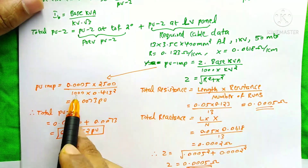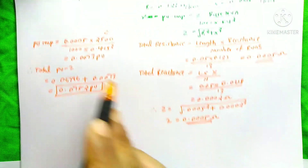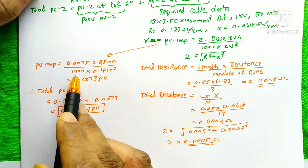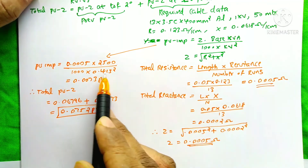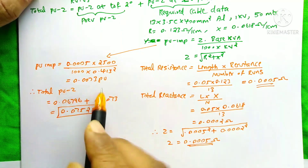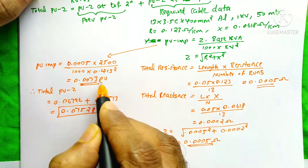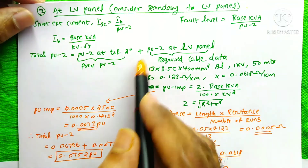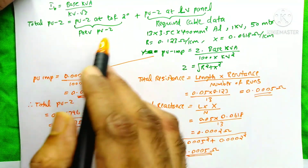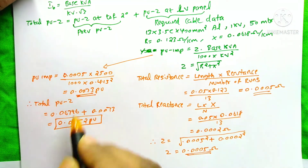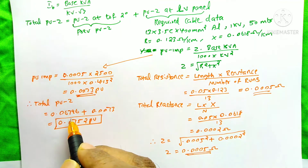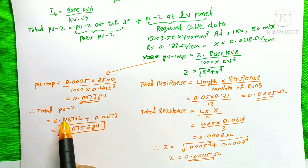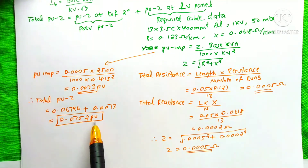Substituting: Z of 0.0005 into base kVA of 2500 kVA divided by 1000 into 0.415 squared. The answer is 0.0073 per unit impedance at the LV panel. So the total per unit impedance is the previous secondary value of 0.06796 plus 0.0073, giving a total per unit impedance of 0.0752.